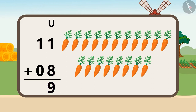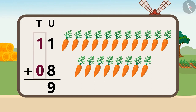In any two-digit number, the number written on the left hand side is called the tens place. Here, the numbers written in the tens place are 1 and 0. What is the number when 1 is added to 0? That's right, 1. Let's write it under the tens place, like this.